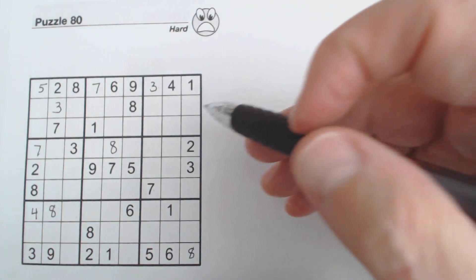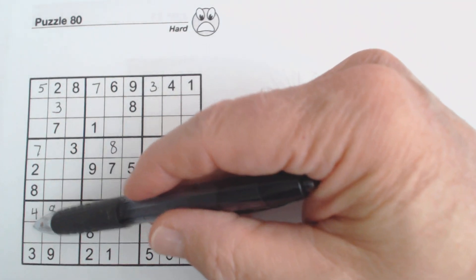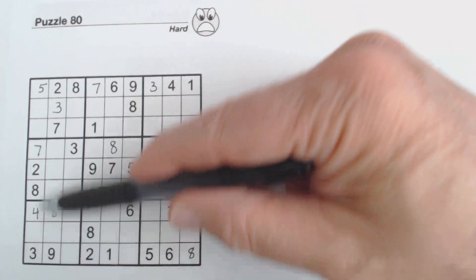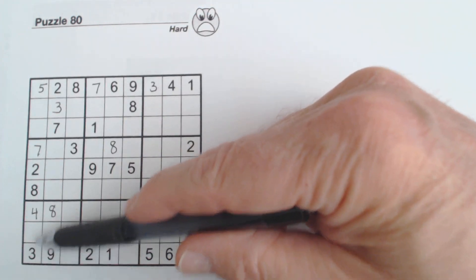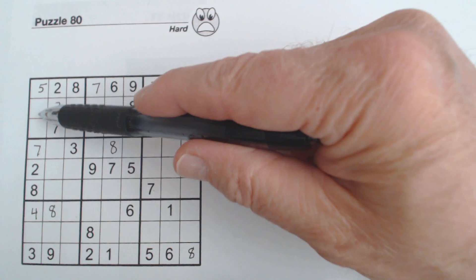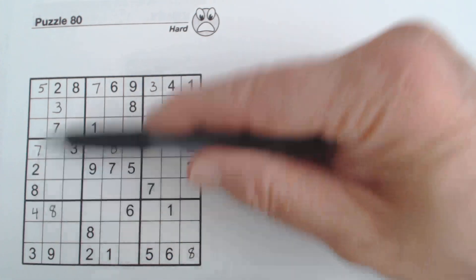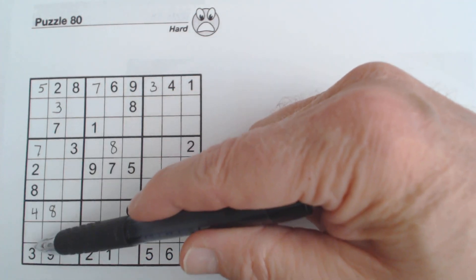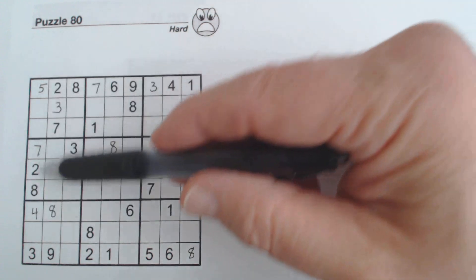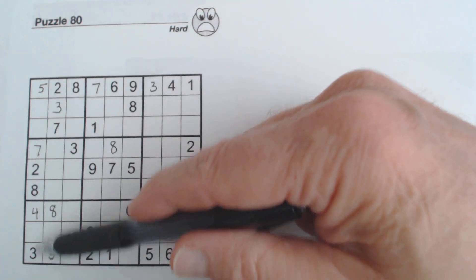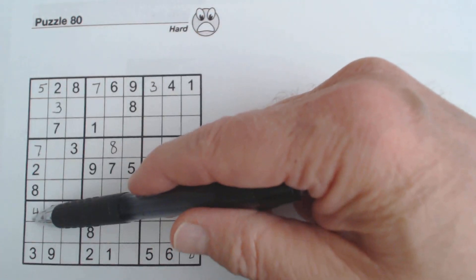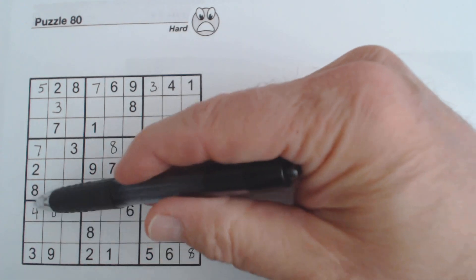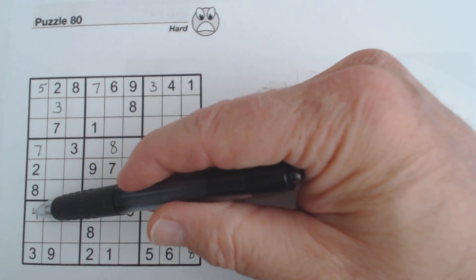How did I get a 4 there? Well, we've got what's missing in this column here. We've got 1, 4, 6, 9 missing in this column before I put the 4 in. We've got a 1, a 6, and a 9 here, so we know that's a 4.